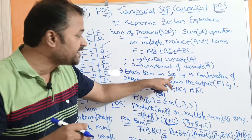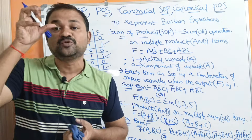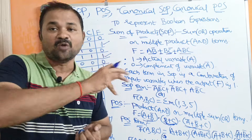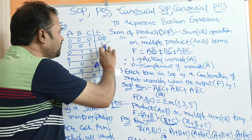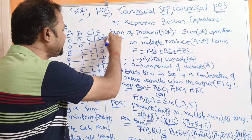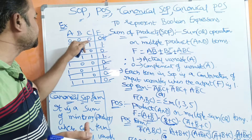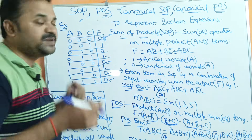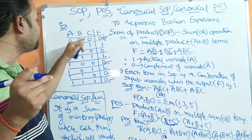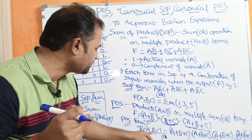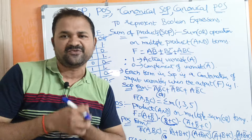Each term in POS is a combination of input variables when the output is zero. When the output is low, we have to write the combination of input terms. Here we have five cases where the output is zero. The first combination is 000, and since 0 means the actual variable in POS, we can write this as A plus B plus C.